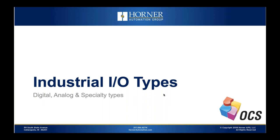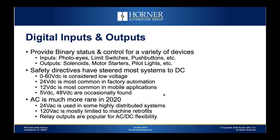Over the years, safety directives have steered most systems to DC voltages. Zero to 60 volts DC is considered low voltage and safest. The most common voltage in factory automation is 24 volts DC. 12 volts is most common in mobile applications. There are also applications for 5 volts and 48 volts. AC is much more rare in 2020, at least from the standpoint of control voltages like push button and pilot light voltages.